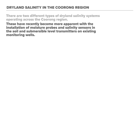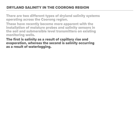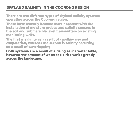There are two different types of dryland salinity systems operating across the Kroong region. These have recently become more apparent with the installation of moisture probes and salinity sensors in the soil and submersible level transmitters on existing monitoring wells. The first is salinity as a result of capillary rise and evaporation, whereas the second is salinity occurring as a result of water locking. Both systems are a result of a rising saline water table, however the amount of water table rise varies greatly across the landscape.